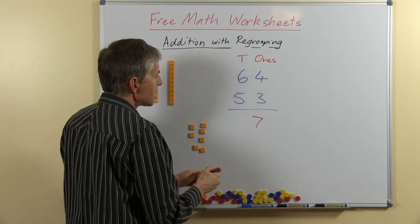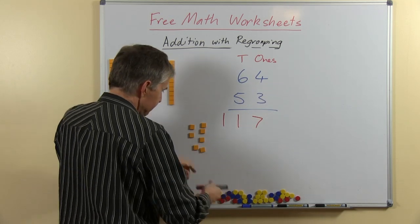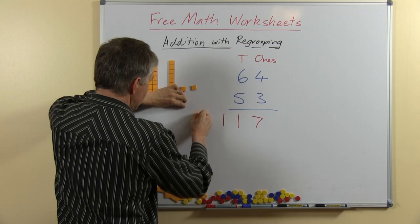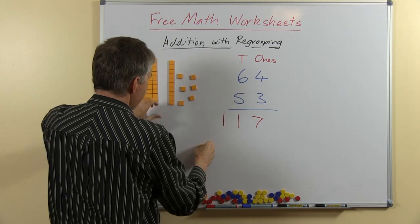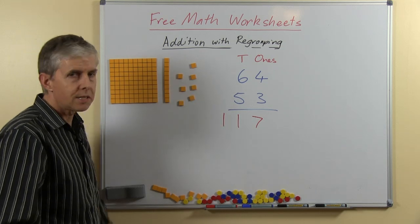So when we write this down, 6 and 5 is 11, that makes 1 ten and 100. And then I'll move the 7 back here, and there's our answer, so you can see the answer 117.